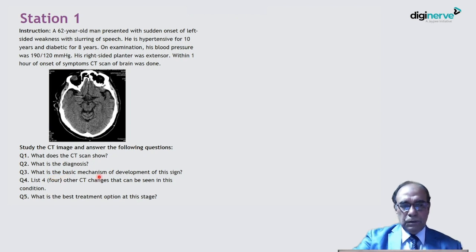Question 3: What is the basic mechanism of development of this sign? Question 4: List 4 other CT changes that can be seen in this condition. Question 5: What is the best treatment option at this stage?